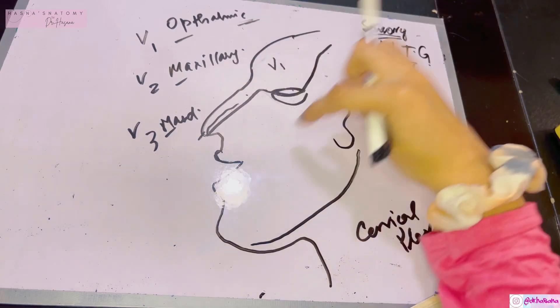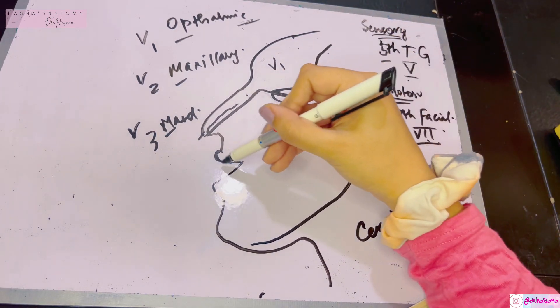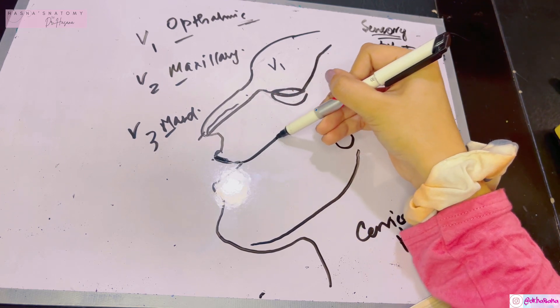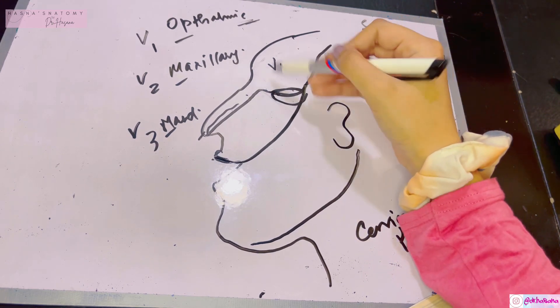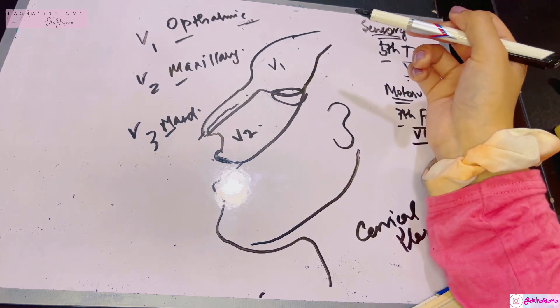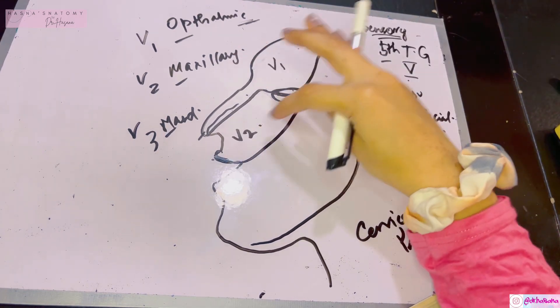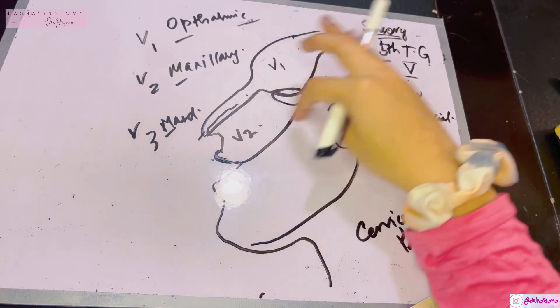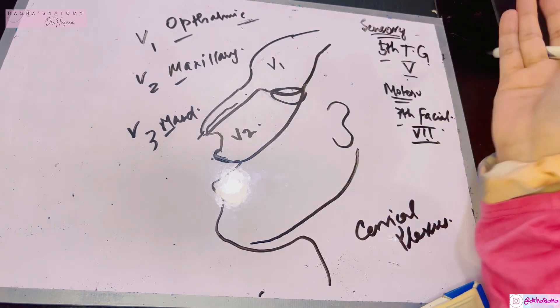Next, draw a smile. I told you the lower limit should be the upper lip, so I'm just going to do a smile and join the line with the V1 supply. Now we've drawn the area of supply of V2: the upper lip and the cheek are supplied by the V2 division of the trigeminal nerve.